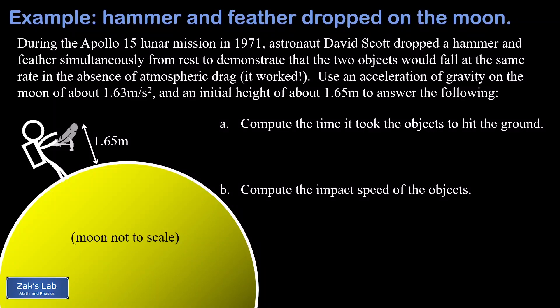During the Apollo 15 lunar mission in 1971, an astronaut named David Scott dropped a hammer and a feather simultaneously from rest to demonstrate that the two objects would fall at the same rate in the absence of atmospheric drag.